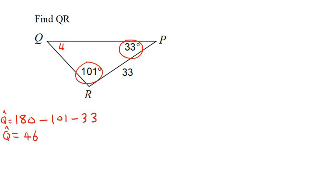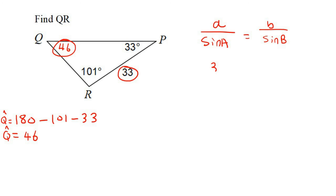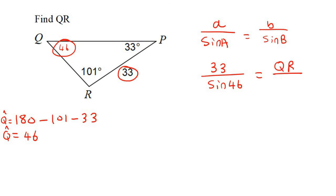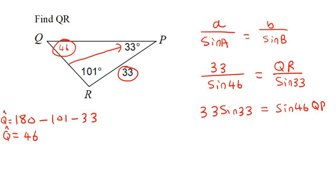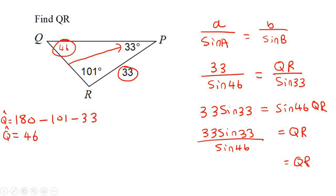We can fill that in now. All of a sudden, we have an opposite. So let's write out our formula. We could say 33 over sin 46. Now what are we looking for? We're looking for QR — so QR is this one, and the opposite of that is 33 degrees. Then we can use cross multiplication, get QR by itself, and that would be 24.99.